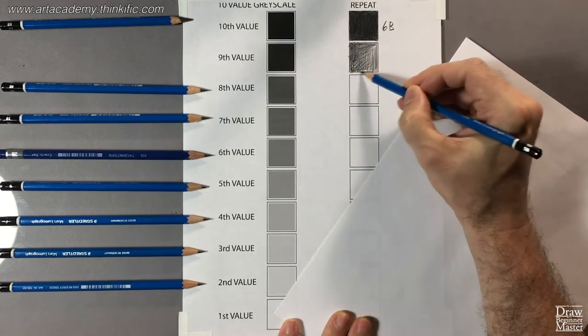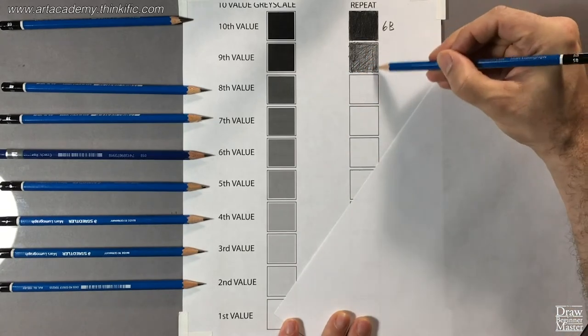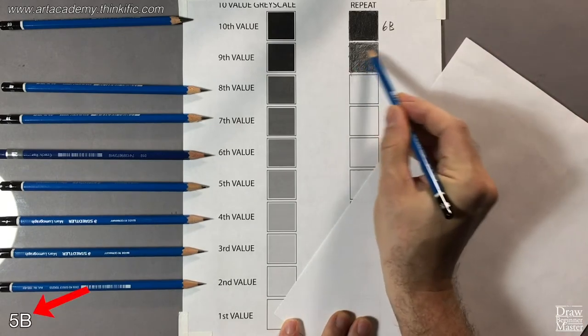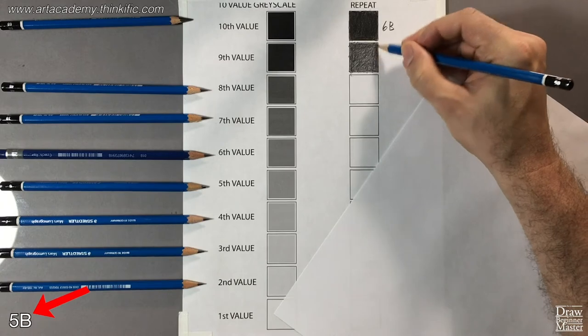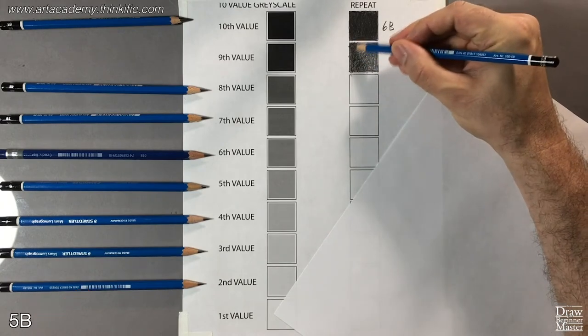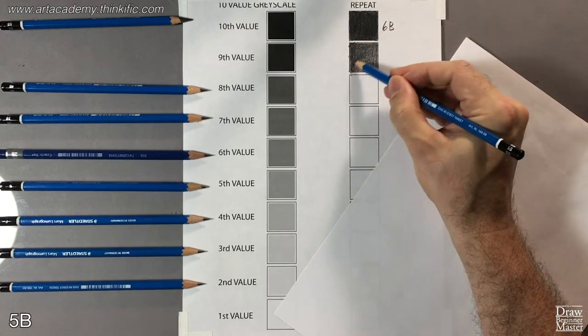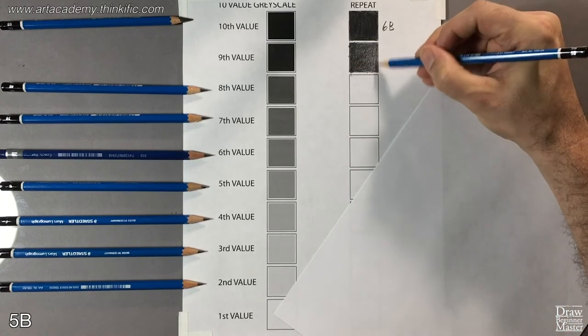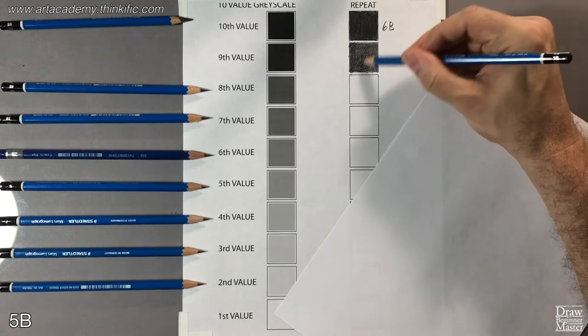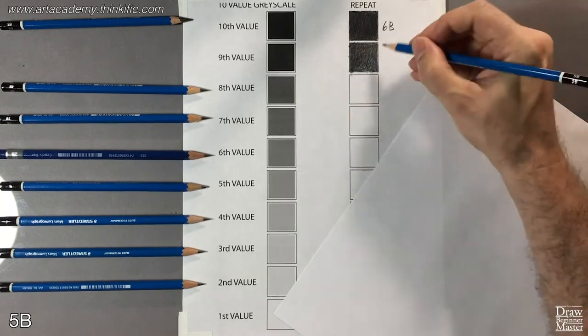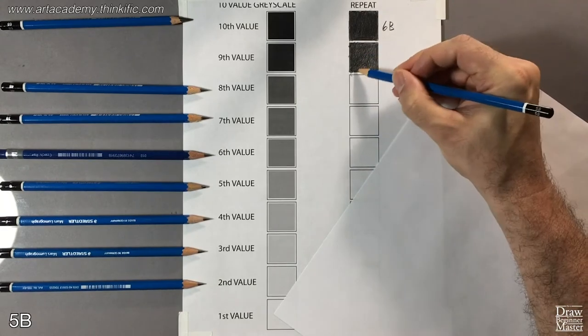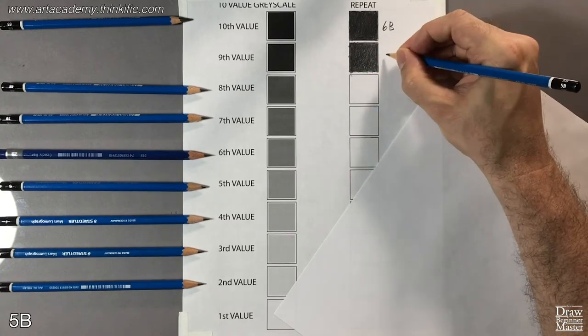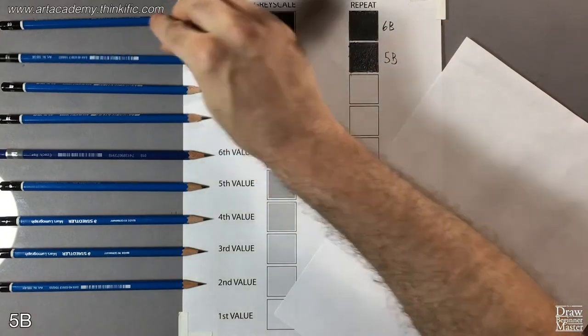I'm going to constantly change pencil leads during this course, so to make sure you can keep track, I'm going to have the number of the lead I'm using written here in the left-hand corner of the screen at all times. Okay, that value looks like it matches, I'll just label it with the lead I used, 5B.